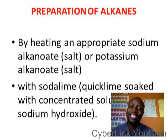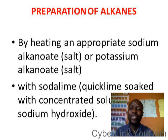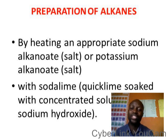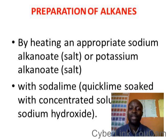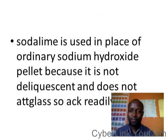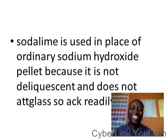An alkane can be prepared by heating sodium alkanoate salt or potassium alkanoate salt — not just heating them, but heating them with soda lime. Soda lime is quicklime soaked with concentrated solution of sodium hydroxide. So soda lime is not ordinary sodium hydroxide; it is quicklime (CaO) soaked with concentrated sodium hydroxide solution. Soda lime is used in place of ordinary sodium hydroxide pellets because it is not deliquescent and does not attack glass readily.